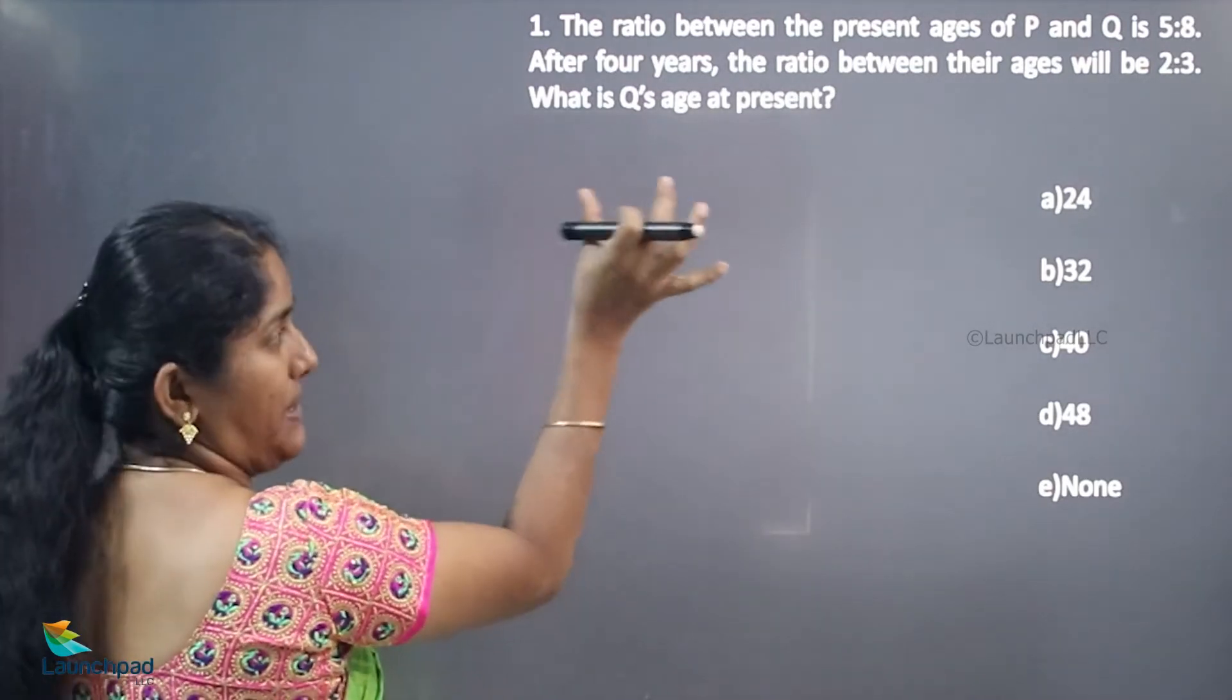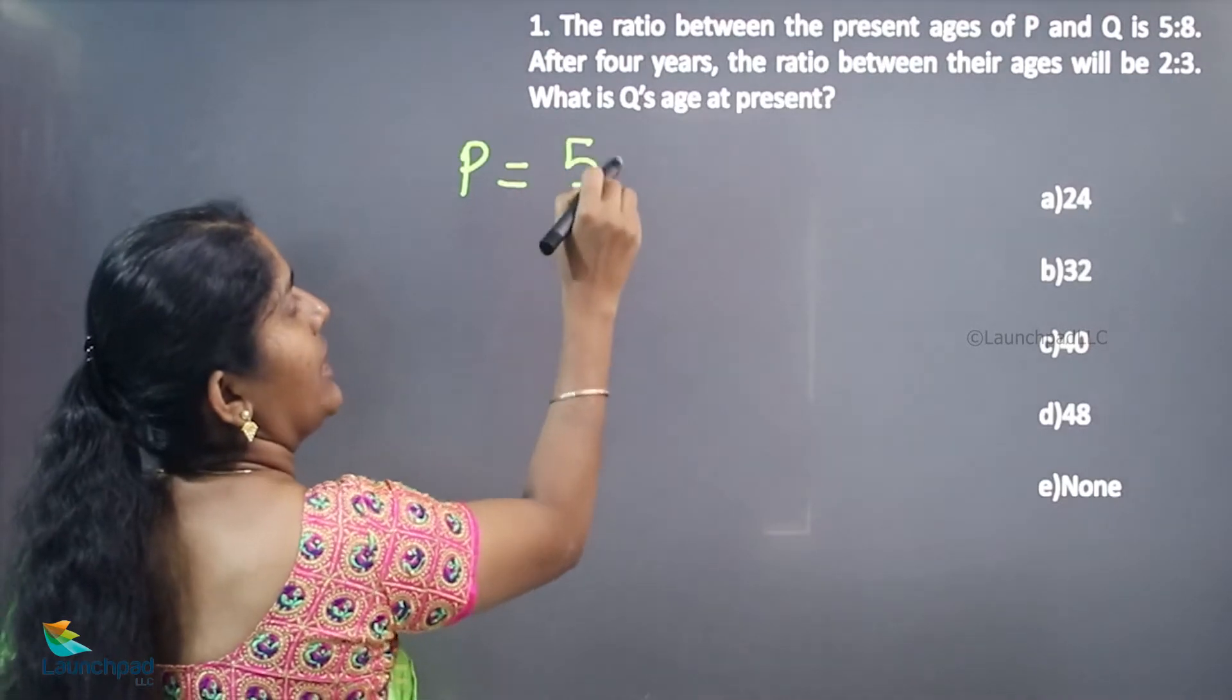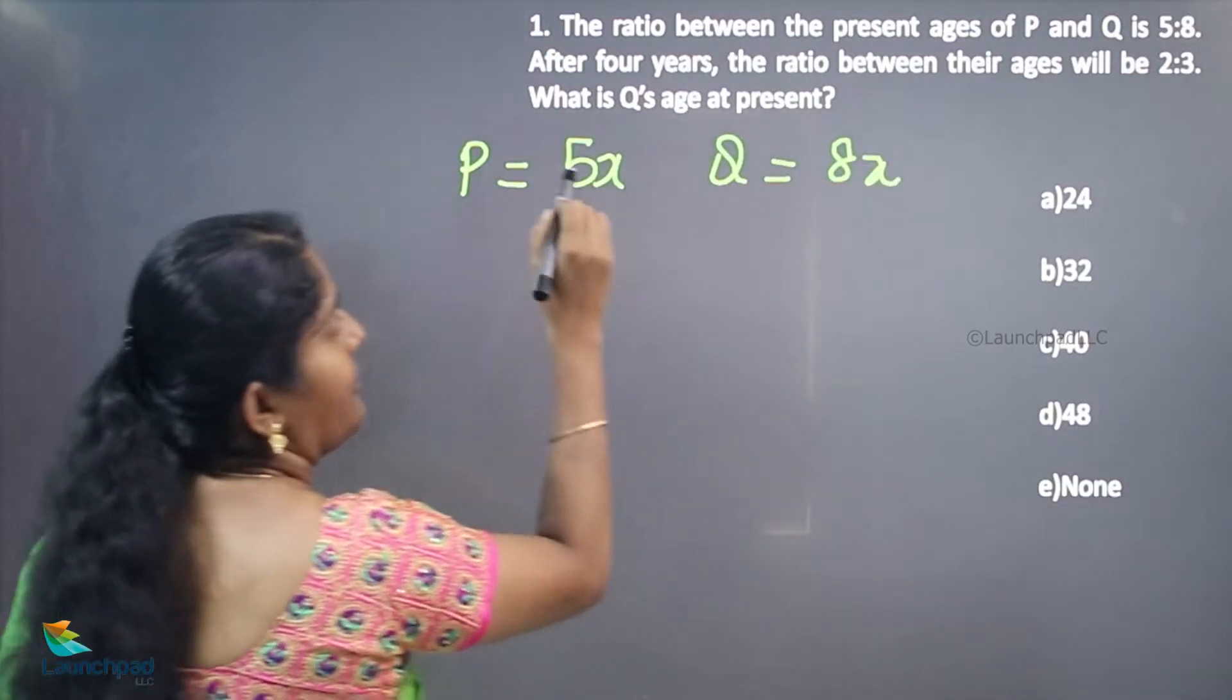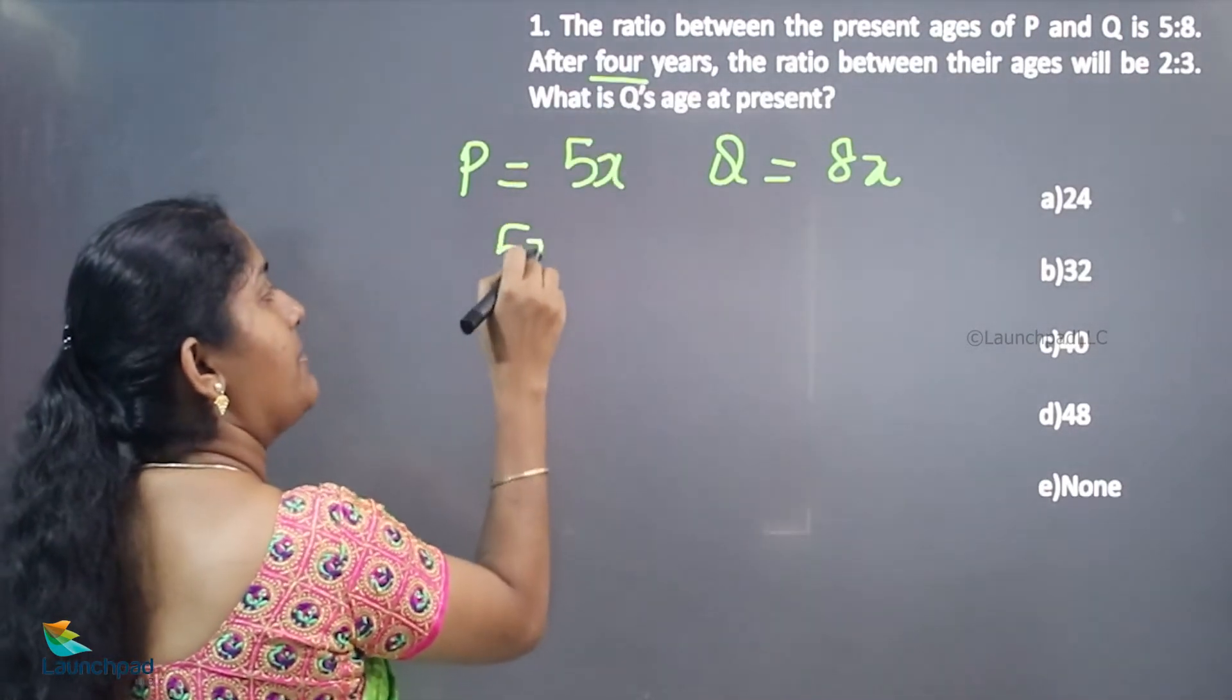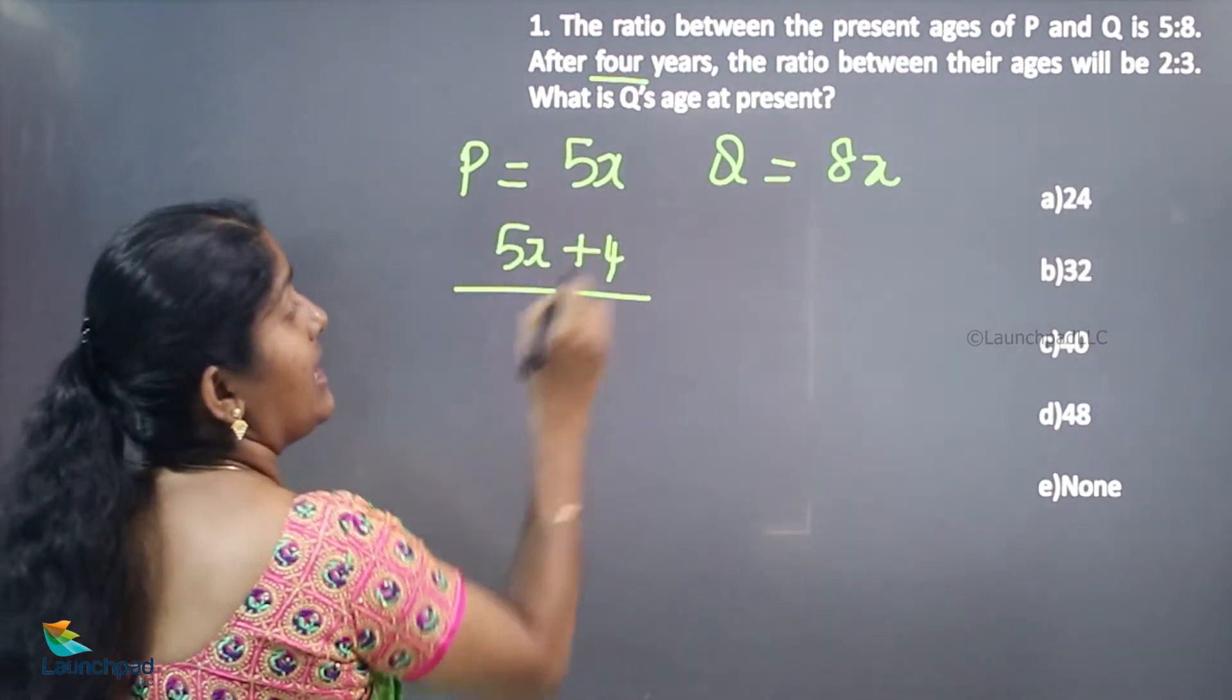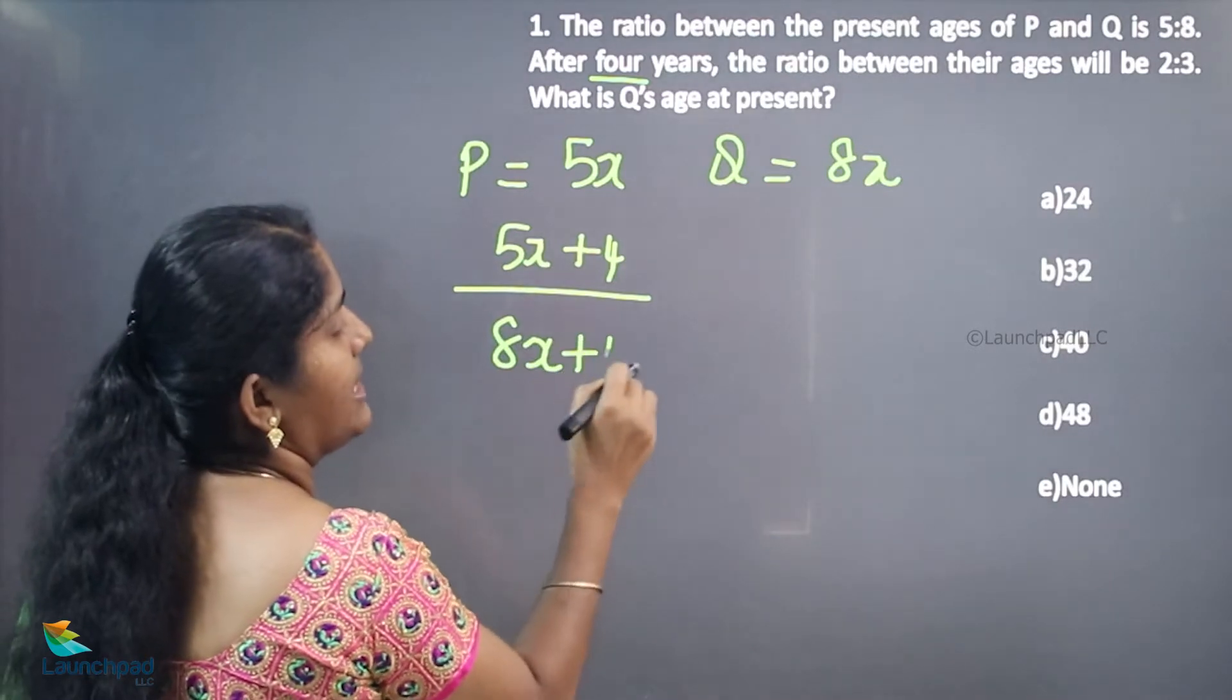We don't know P's present age. We can consider P's present age is 5X and Q's present age is 8X. After 4 years, 5X plus 4 for P, and 8X plus 4 for Q.